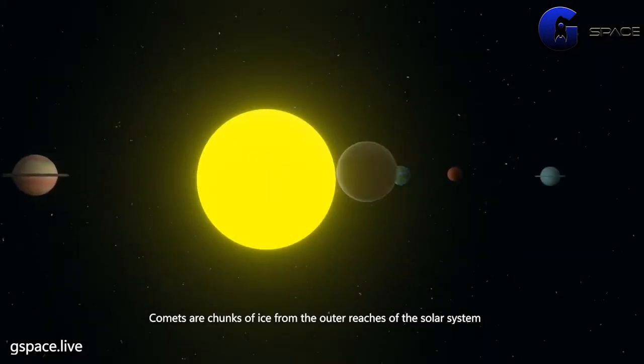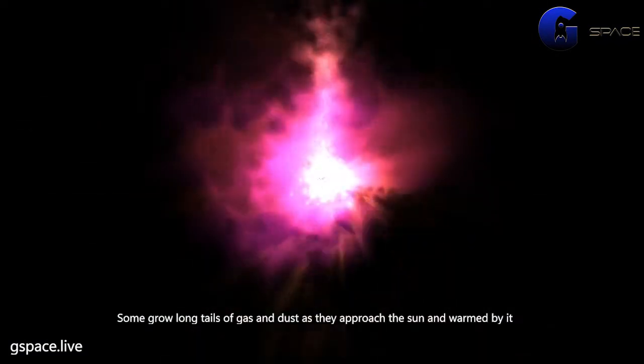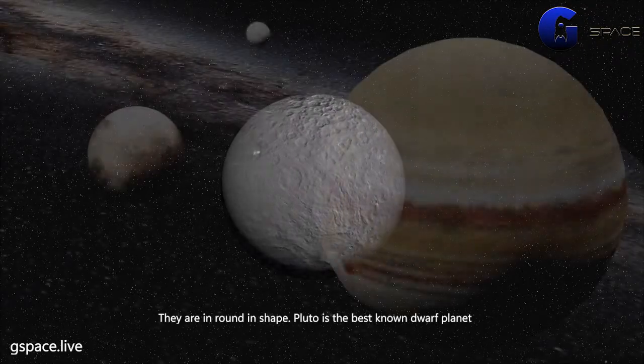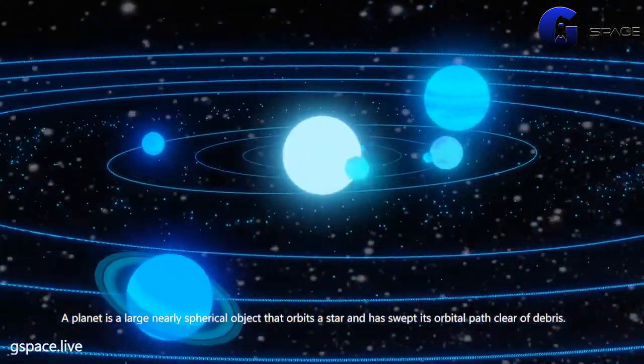Comets are chunks of ice from the outer reaches of the solar system. Some grow long tails of gas and dust as they approach the sun and are warmed by it. Dwarf planets are larger than asteroids but smaller than planets. They are round in shape. Pluto is the best known dwarf planet.